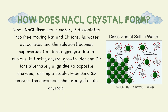When sodium chloride dissolves in water, it separates into Na+ and Cl- ions, which move freely in the solution. As the water evaporates, the solution becomes supersaturated and ions aggregate into a nucleus. From here, they align alternately due to their opposite charges, creating a stable and repeating 3D pattern.